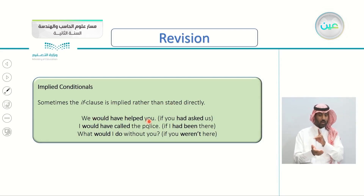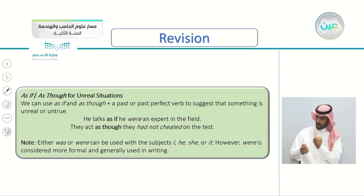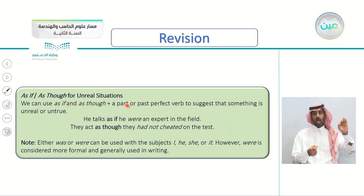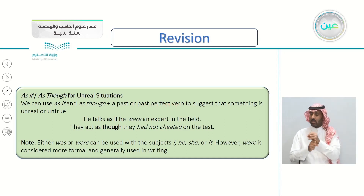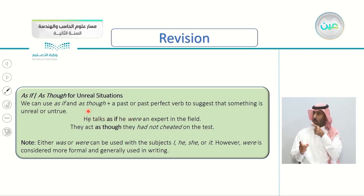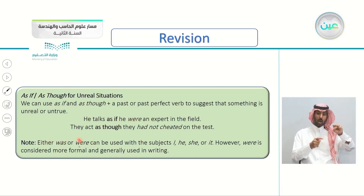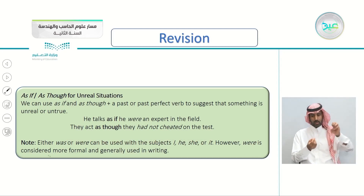We would have helped you if you had asked us. And we also learned about as if and as though. For unreal situations, when we talk about something that's unreal or untrue, we can use as if and as though plus a past or past perfect verb to suggest that something is unreal or untrue. For example, he talks as if he were an expert. Is he an expert? No, of course. We said 'were' here because either was or were can be used with the subjects I, he, she, or it. However, were is more formal and generally used especially in writing.